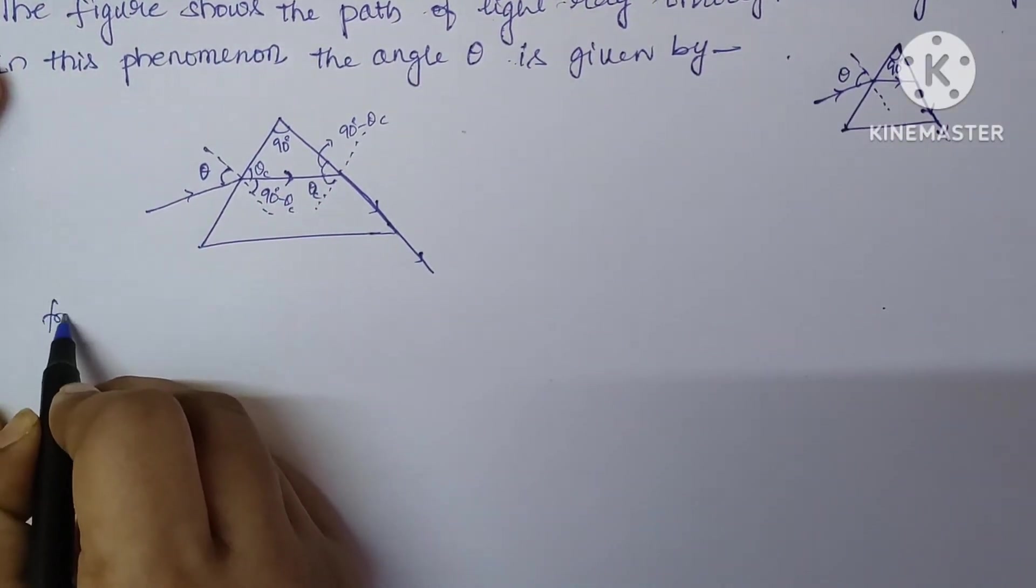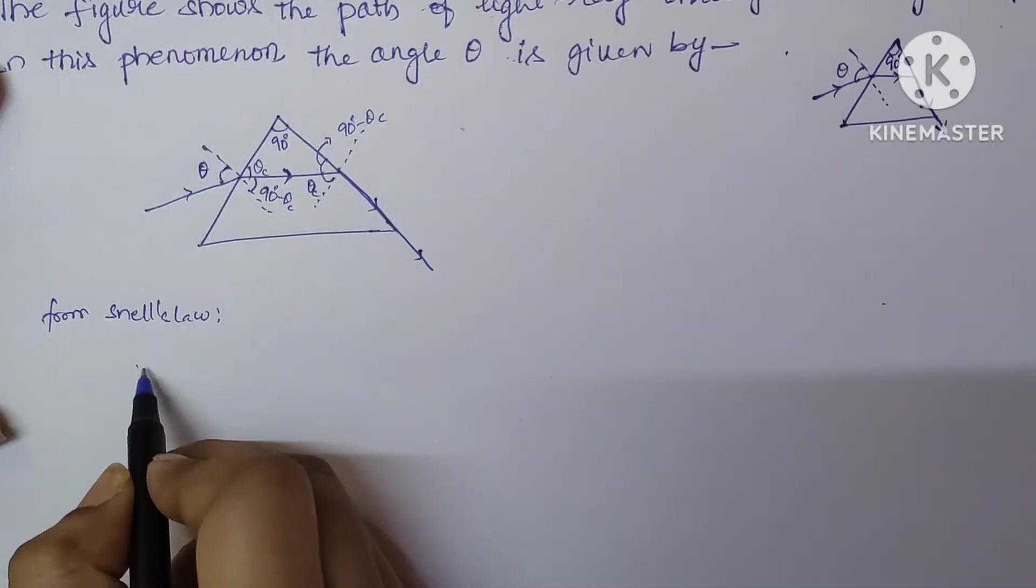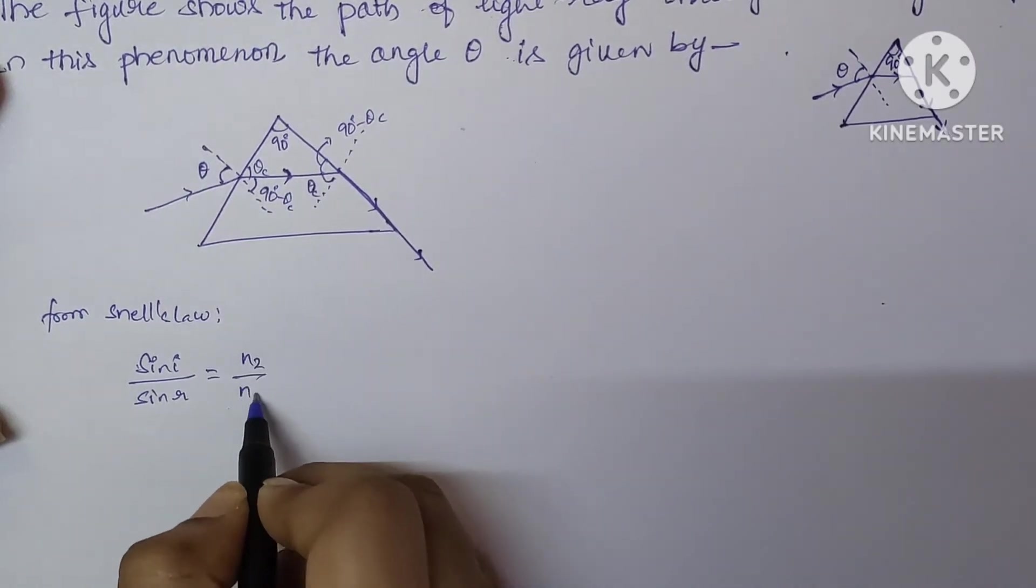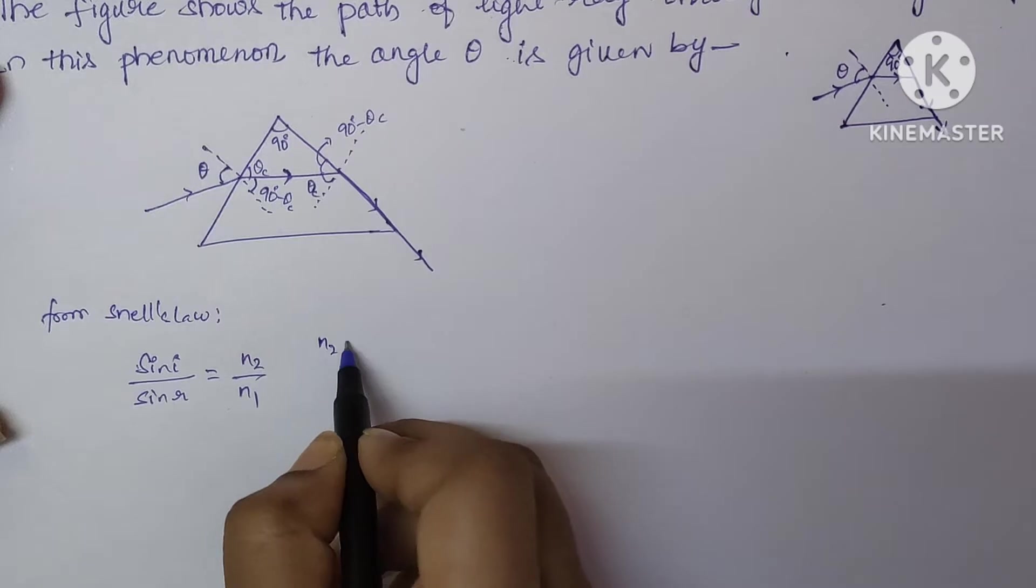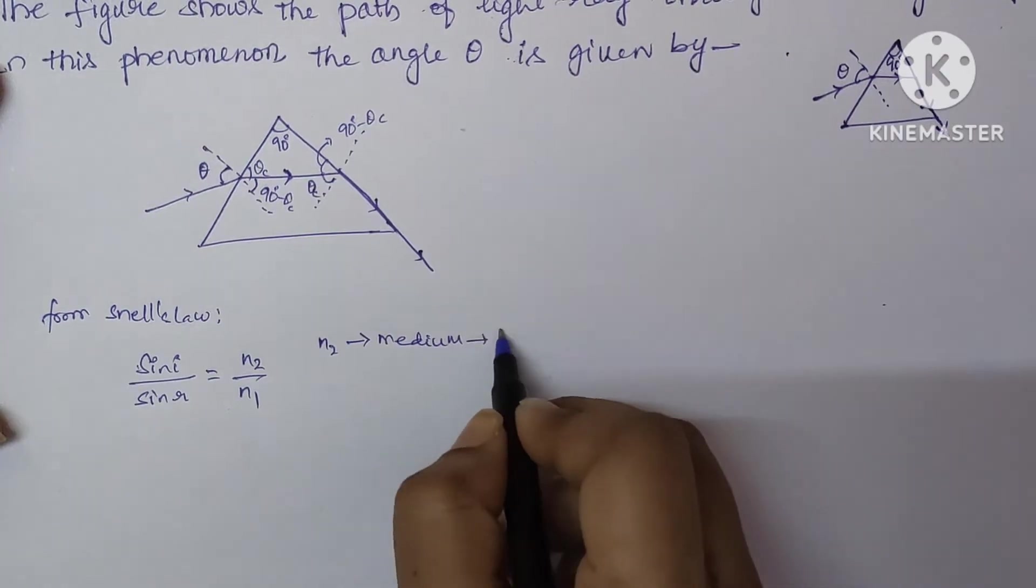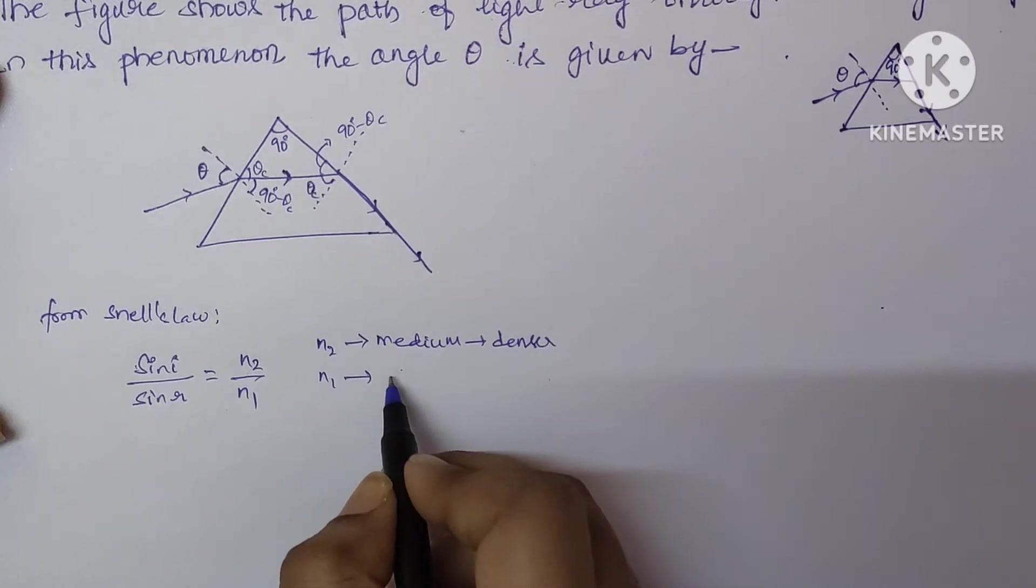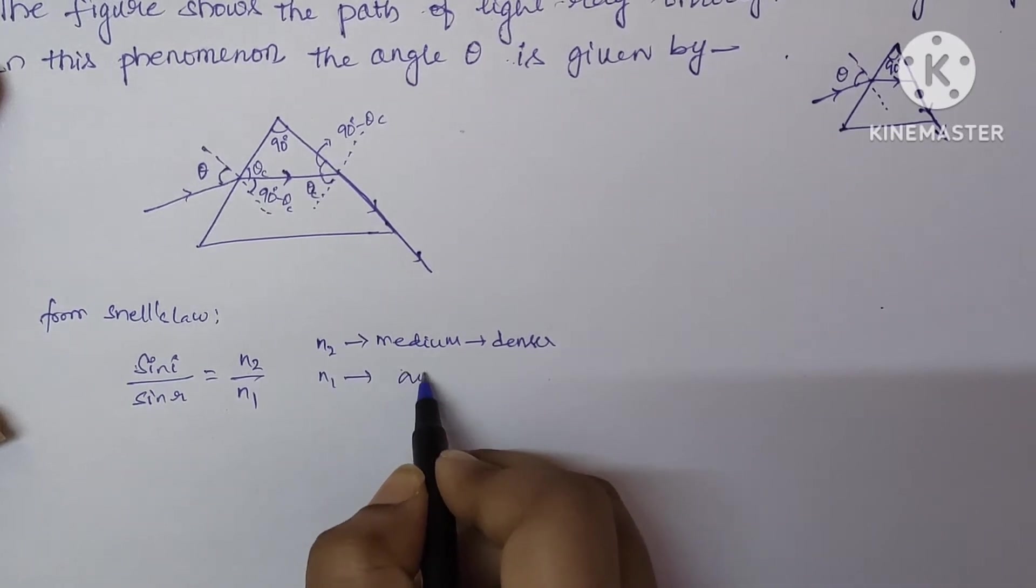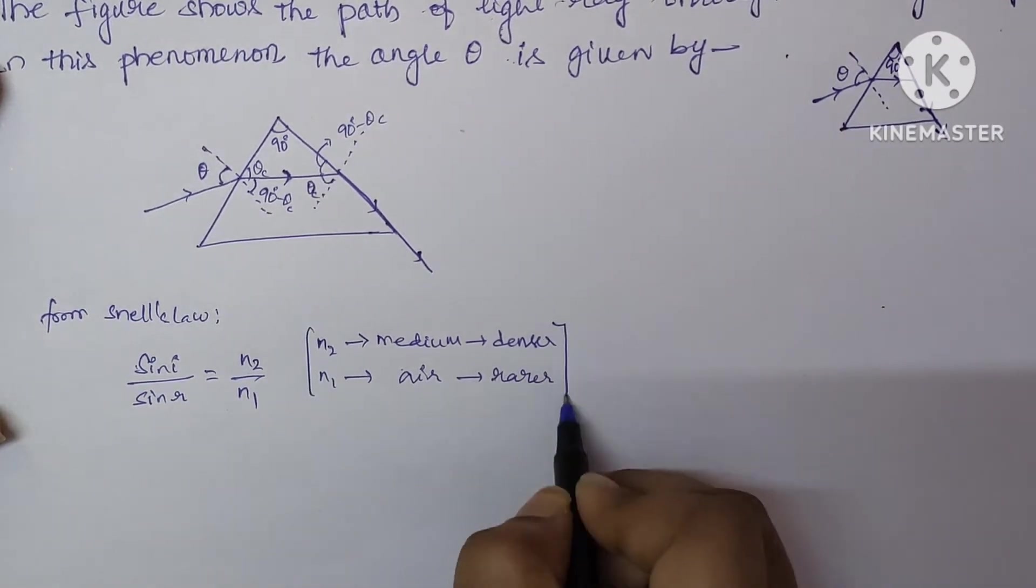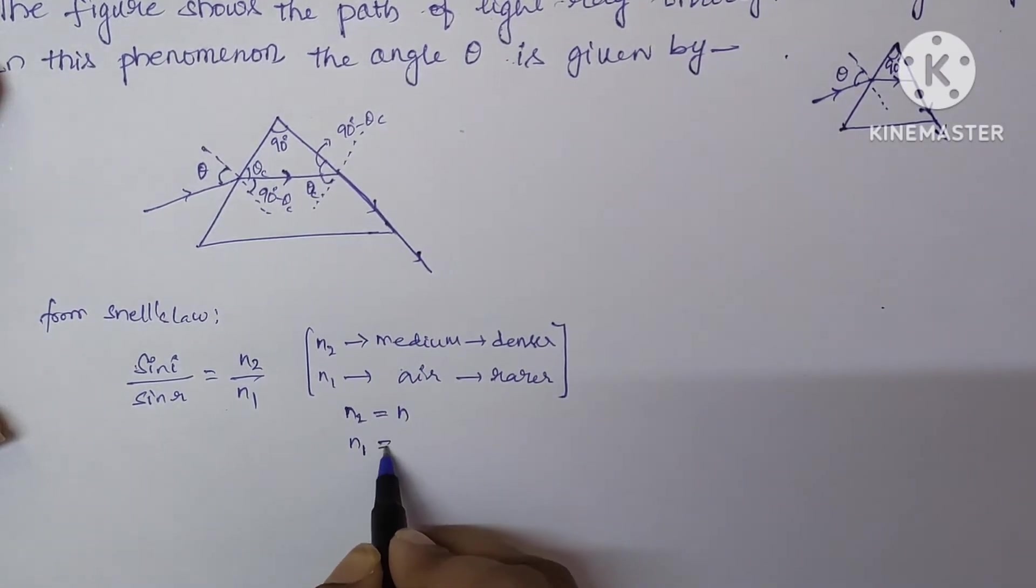We know from Snell's law, the formula is sin i by sin r equal to N2 by N1. Here N2 is the denser medium. Some medium, we can consider it as a denser medium. Ray is passing through the prism. And N1 is a medium which is air, which we can consider as a rarer medium.